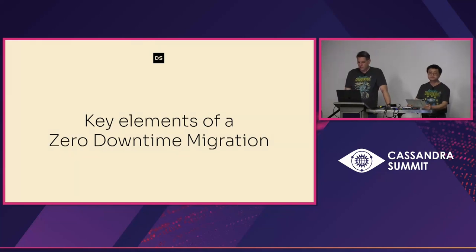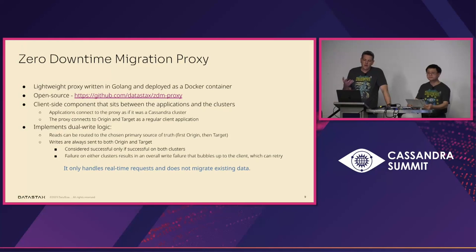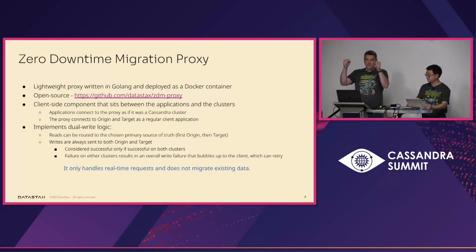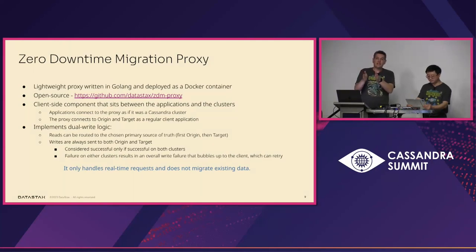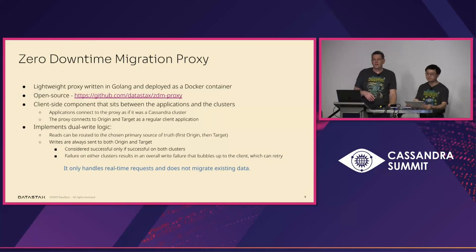The proxy is a lightweight CQL protocol handler and wrapper to bifurcate traffic and keep things in sync. Its one job is to say: I have these two clusters, and I need to keep them in sync after time X. It handles all real-time incoming traffic, and for each request it synchronously ensures that both clusters receive the exact same updates at the exact same consistency level. It's written in Go, deployed as a Docker container, and it's fully open source.